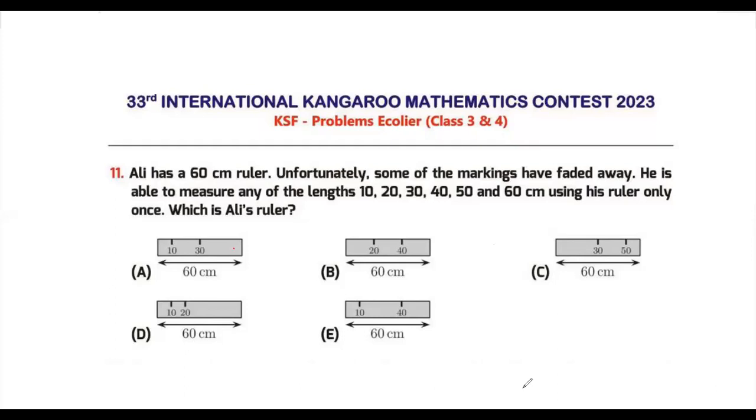Hello friends, today we will be doing Math Kangaroo Contest 2023 Level 3 and 4, question number 11. This is a four-pointer question. Ali has a 60 centimeter ruler. Unfortunately, some of the markings have faded away, which means you can't really see what the marking was. He is able to measure any of the lengths 10, 20, 30, 40, 50, and 60 using his ruler only once. So the condition here is he is able to measure it only once, and he is able to measure all of these measurements.